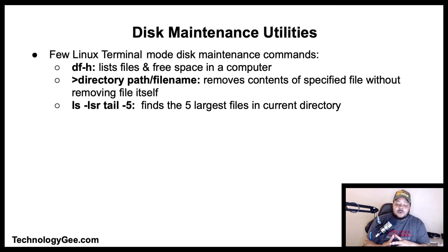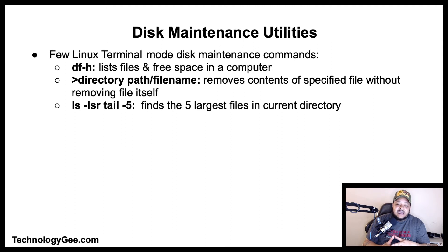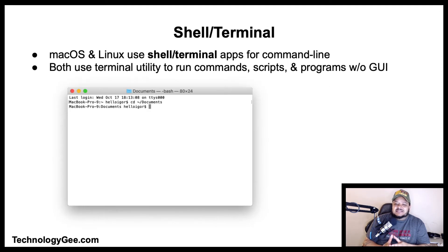The command with the directory path and slash filename removes the contents of a specified file without removing the file itself. The ls -lsr | tail -5 command finds the five largest files in the current directory.